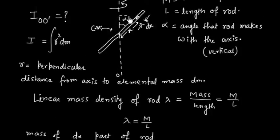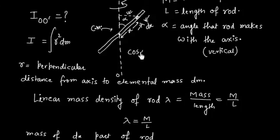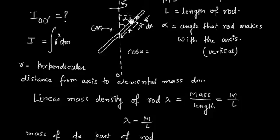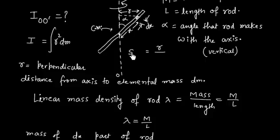Now we have to calculate the perpendicular distance of this elemental section from the axis of rotation. In this triangle, we need this distance. Let us call this perpendicular length r. Using trigonometry, sin alpha equals R divided by x, so from here r is equal to x sin alpha.